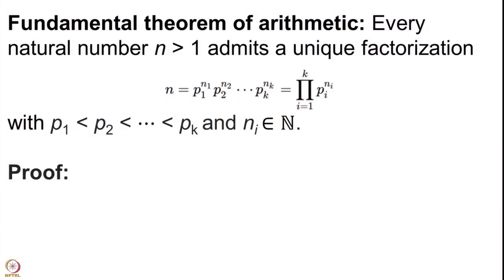Let us begin with the statement of the fundamental theorem of arithmetic. It says every natural number n bigger than 1 admits a unique factorization: n equals p1 to the power n1, p2 to the power n2, dot dot dot, pk to the power nk, where p1, p2, ..., pk are primes put in increasing order, and the powers are natural numbers.